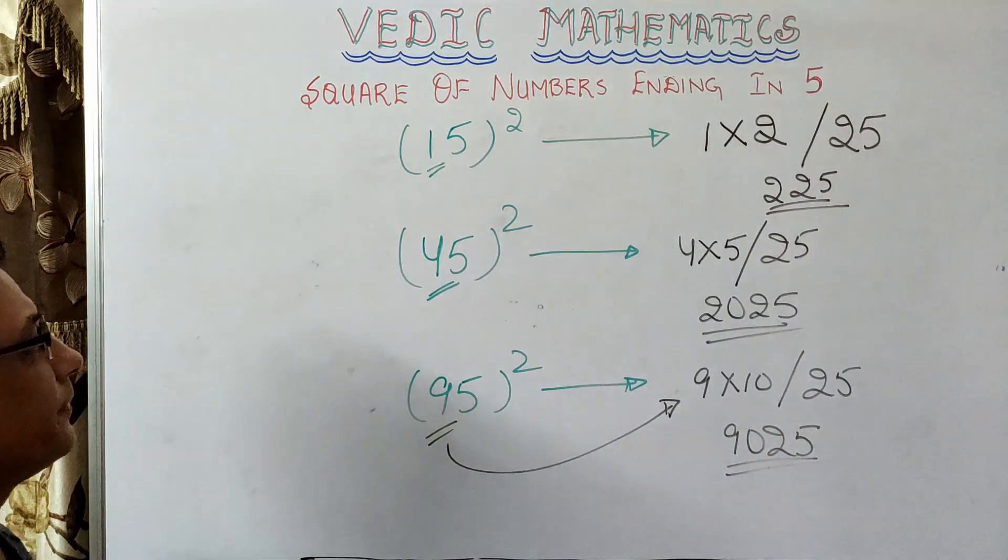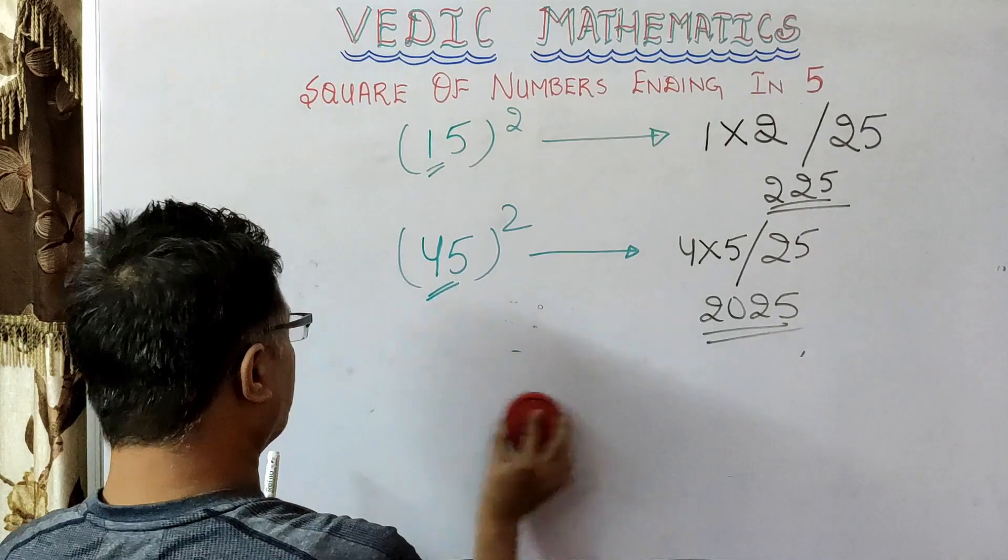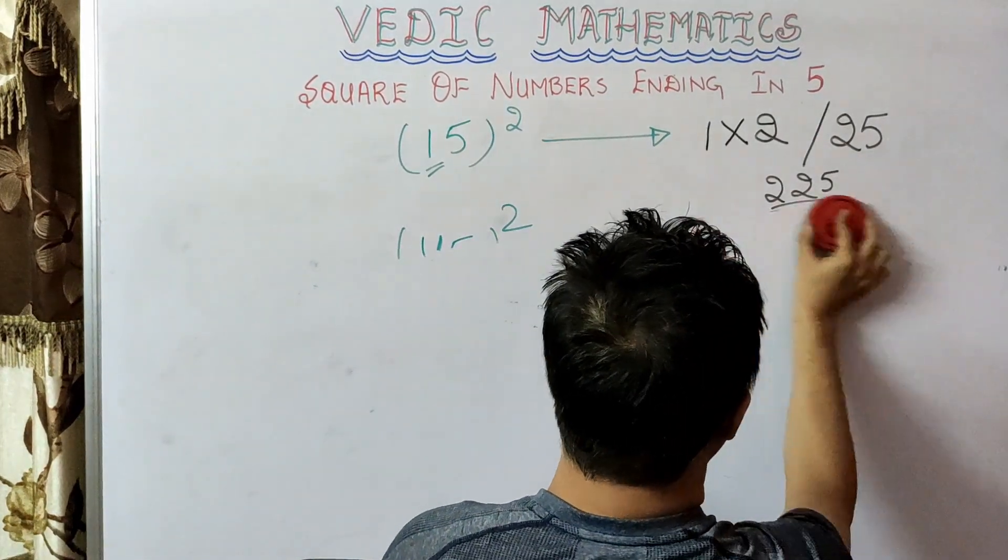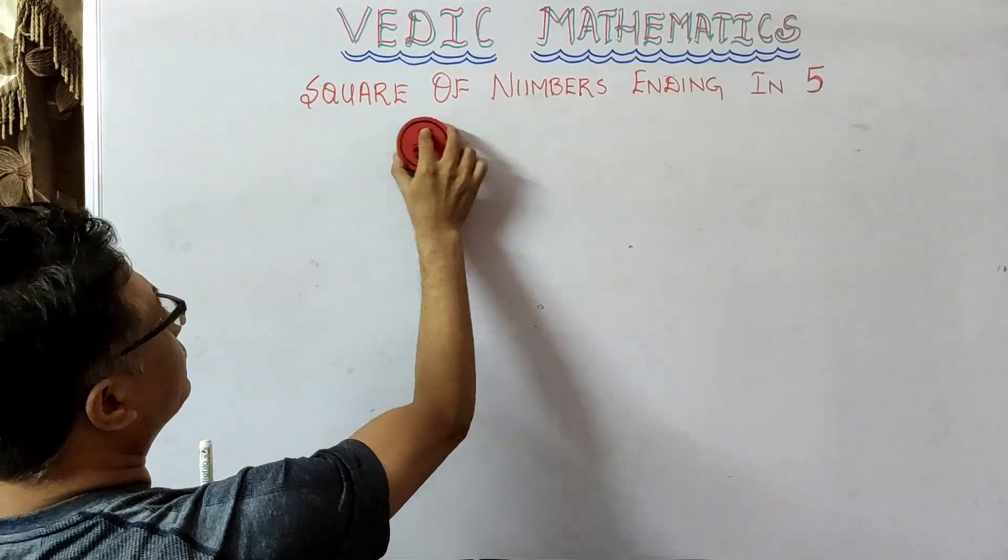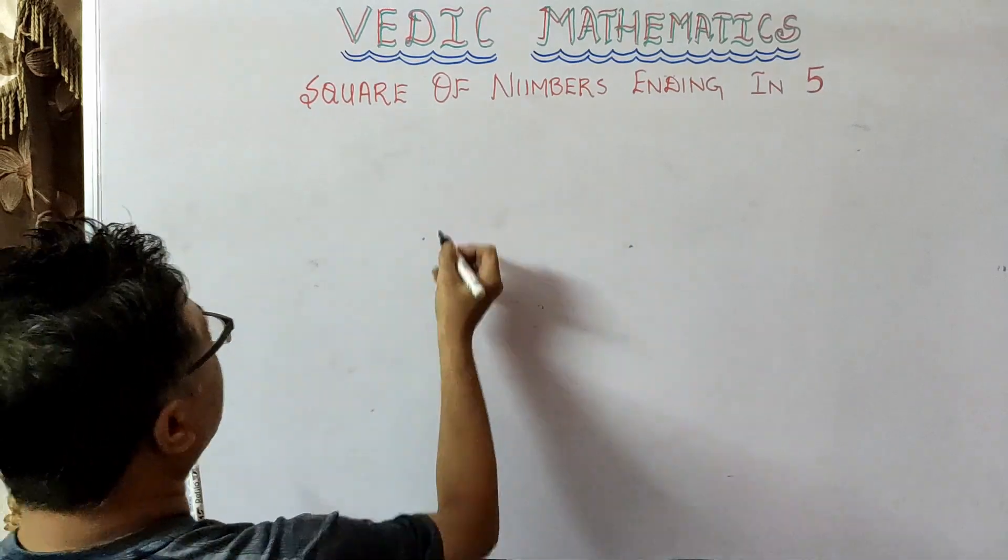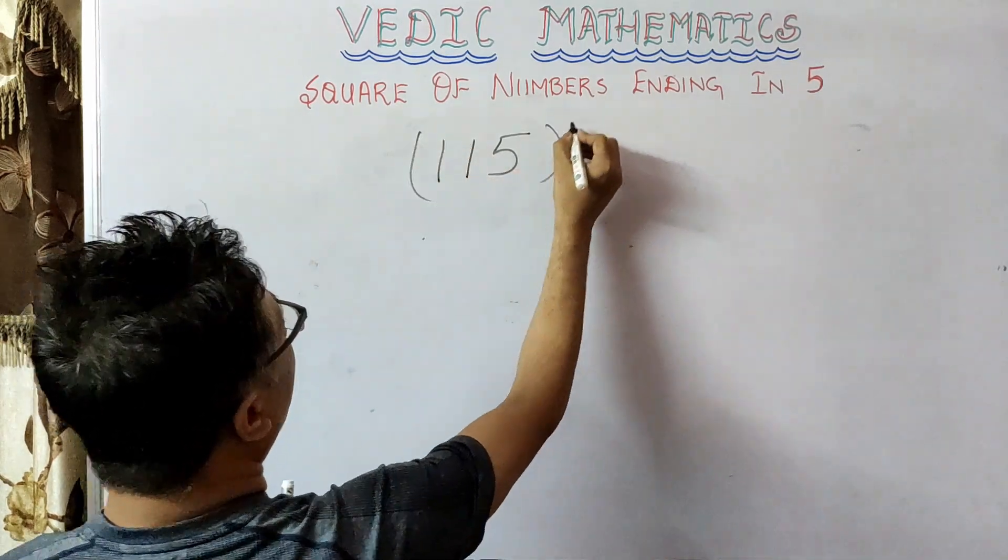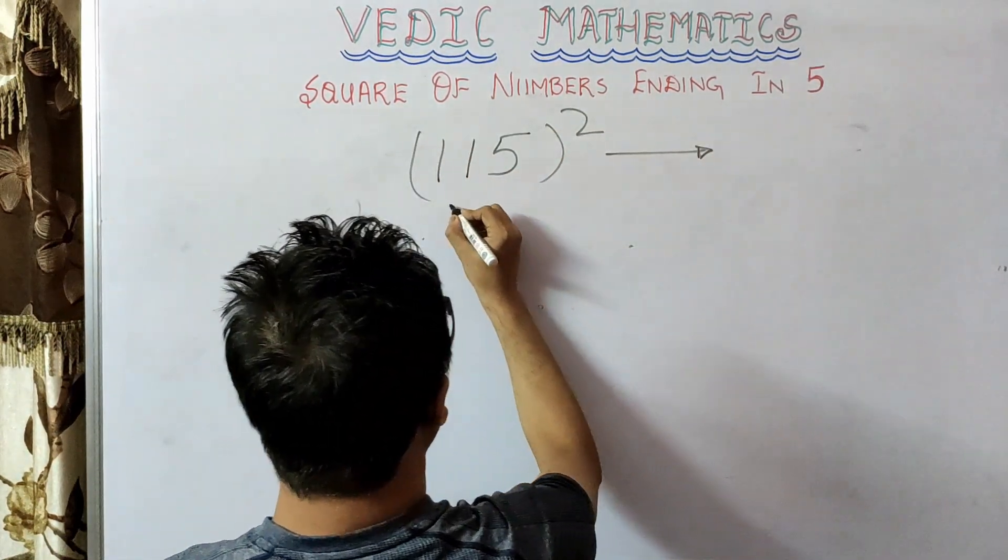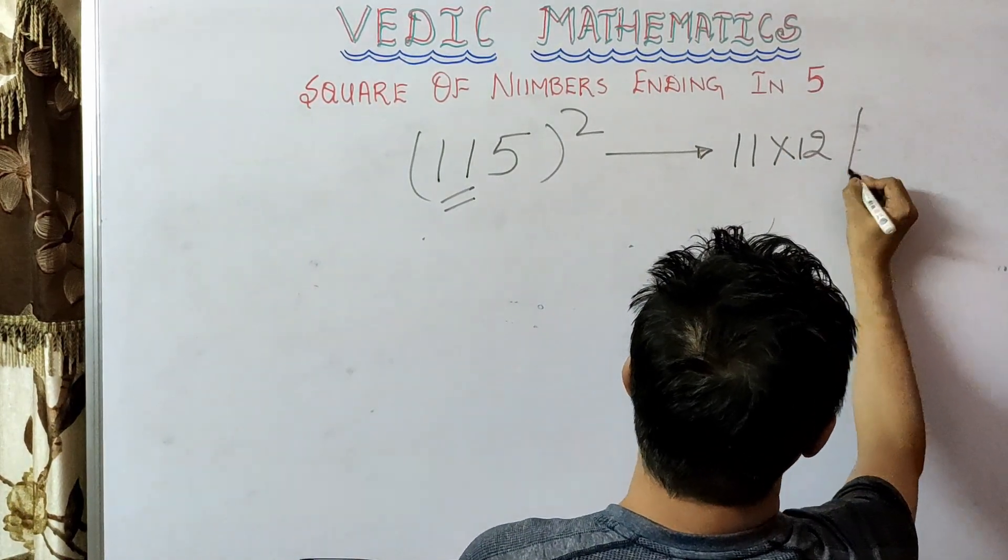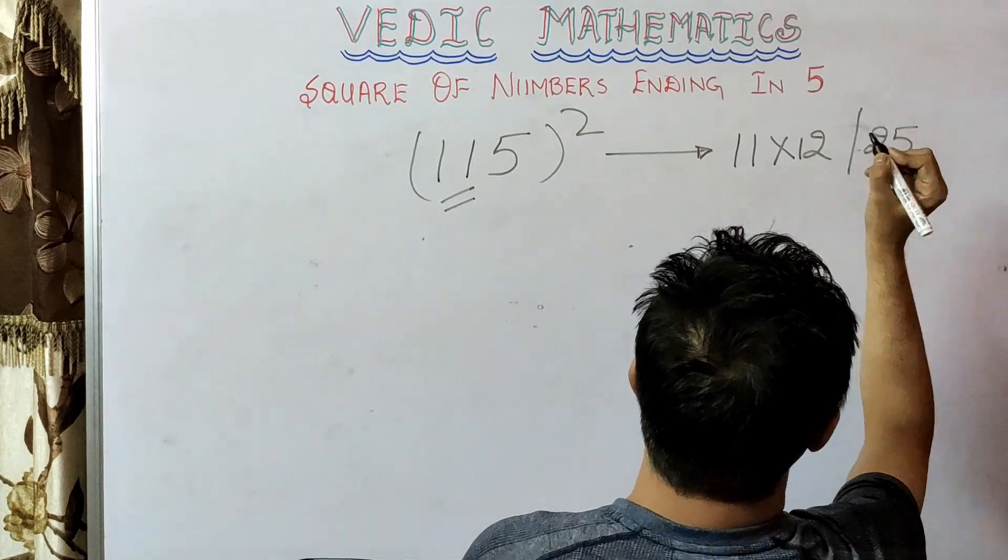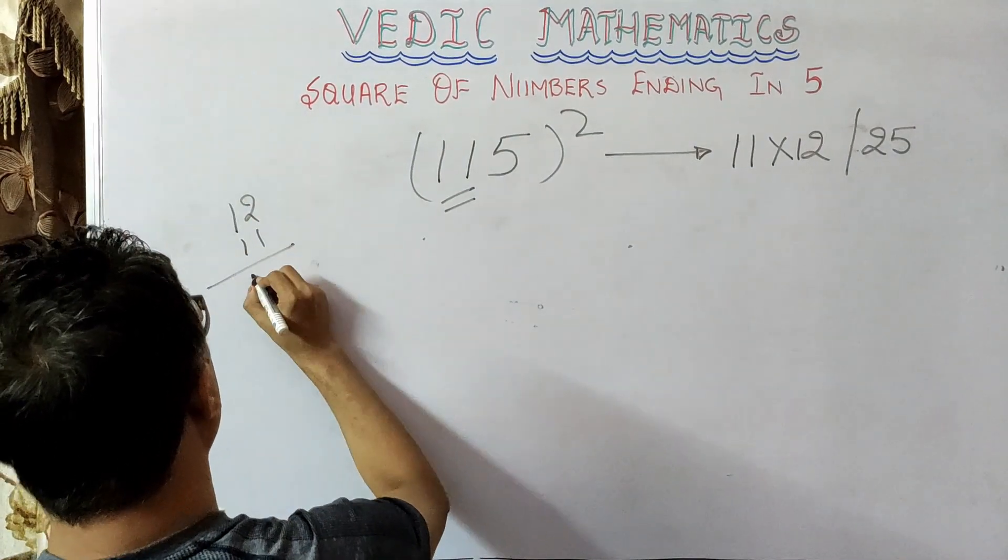answer. Now we will talk about bigger numbers. For example, let's say that you have to find out the square of say 115. So what will you do? Again in the same way, 11 multiplied by 12 and then 25. So what is 11 multiplied by 12? So you have